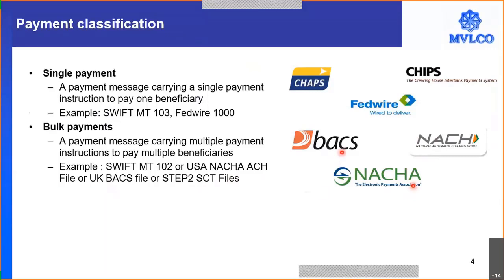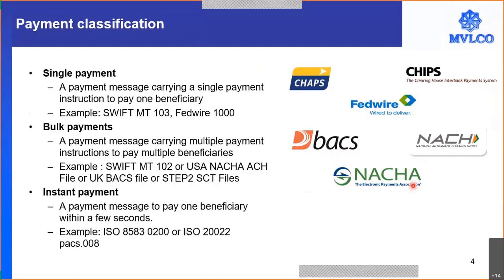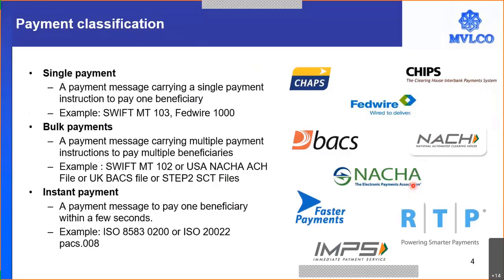The third type of payment is an instant payment. Many of us want to receive payment as fast as possible. If I want to make a payment to Alok using an instant payment system, I can pay instantaneously. In the UK, something like Faster Payments moves the payment instantaneously. In the USA, the RTP (Real-Time Payment) system moves money within a couple of seconds. In the Single Euro Payment Area, RT1 or the TARGET Instant Payment Settlement (TIPS) system can be used. In India, IMPS — the Immediate Payment Service — can be used.